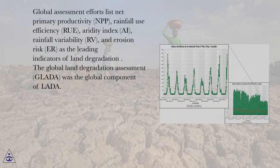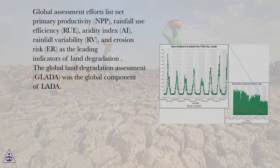Global assessment efforts list net primary productivity (NPP), rainfall use efficiency (RUE), aridity index (AI), rainfall variability (RV), and erosion risk (ER) as the leading indicators of land degradation.